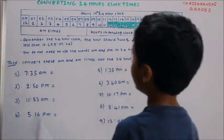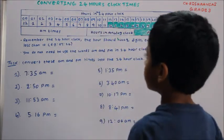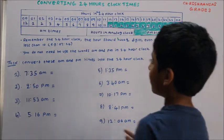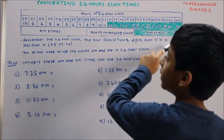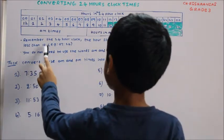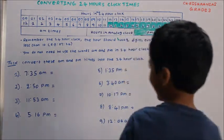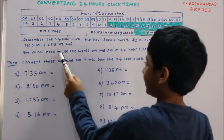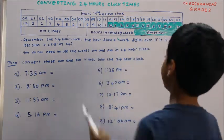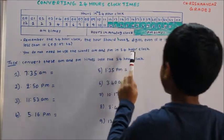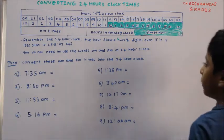Today we'll learn about converting 24-hour clock times. Remember, in the 24-hour clock, the hour should have 2 digits even if it is less than 10. You do not need to use the words AM and PM in 24-hour clock. Convert these AM and PM times into the 24-hour clock.